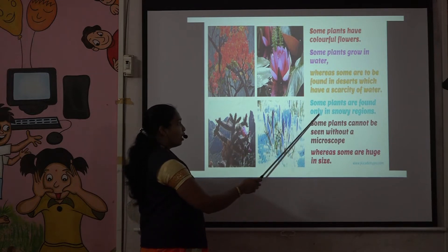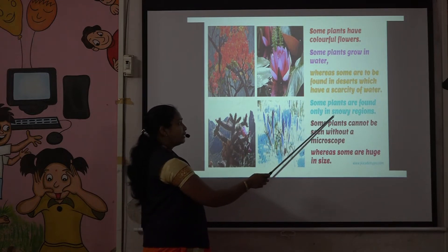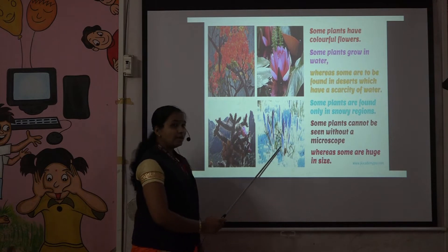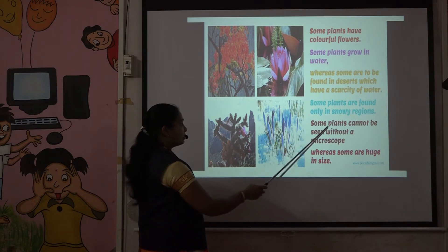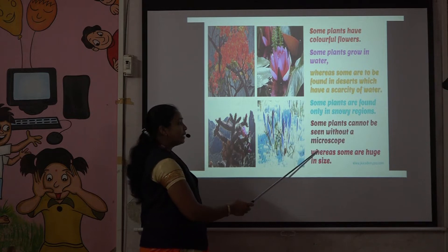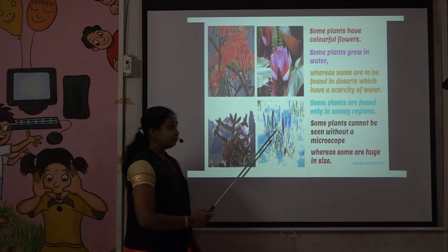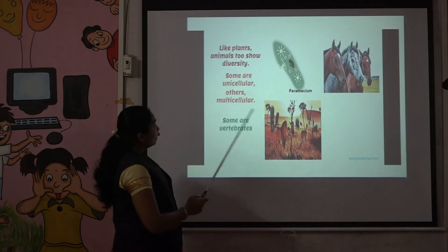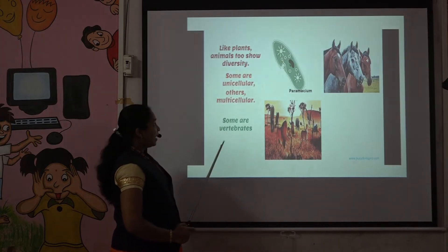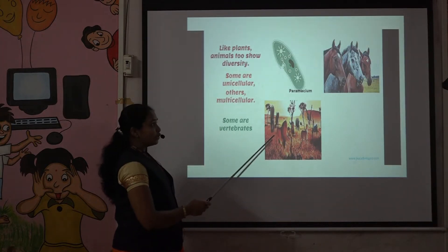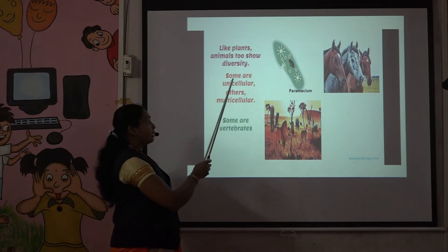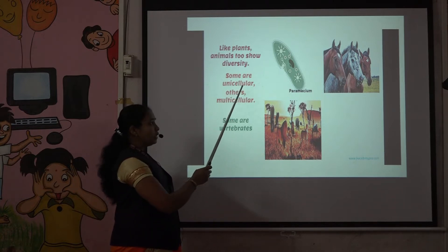Some plants are found only in snowy regions, meaning those plants do not grow in other regions. Some plants cannot be seen without a microscope, whereas some are huge in size and very tall. Just as plants show diversity, animals also show diversity.